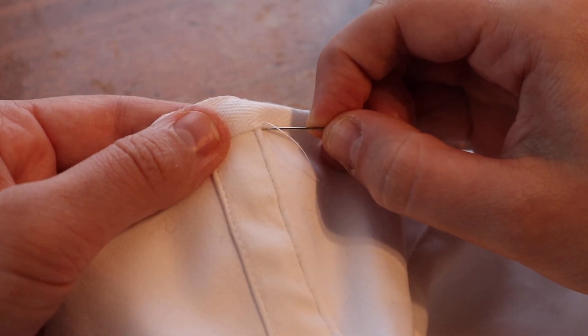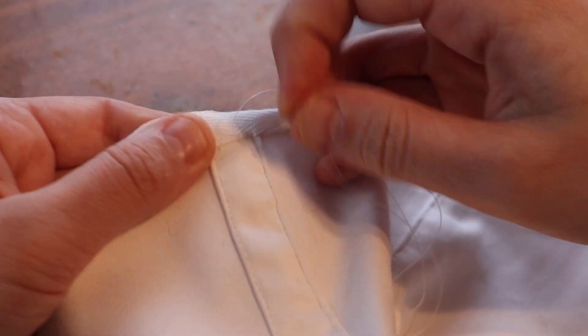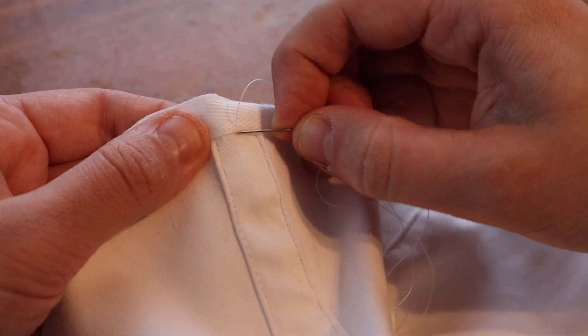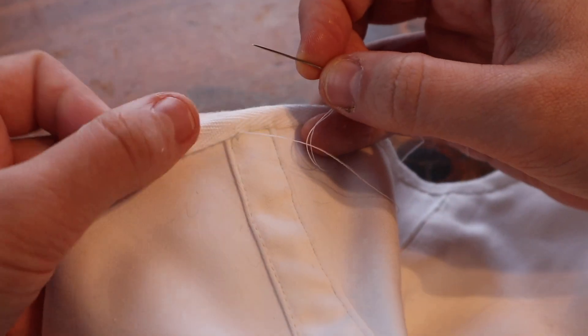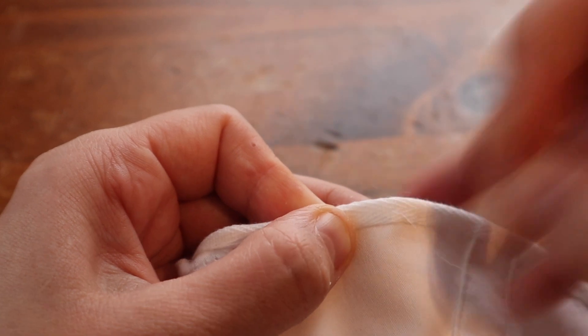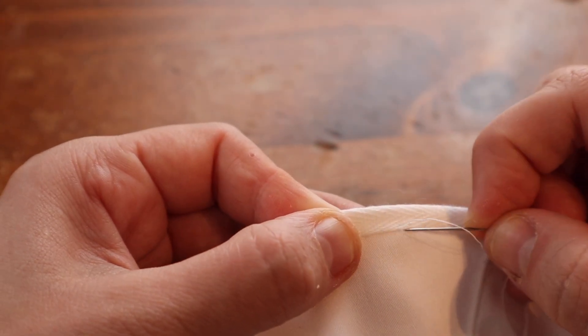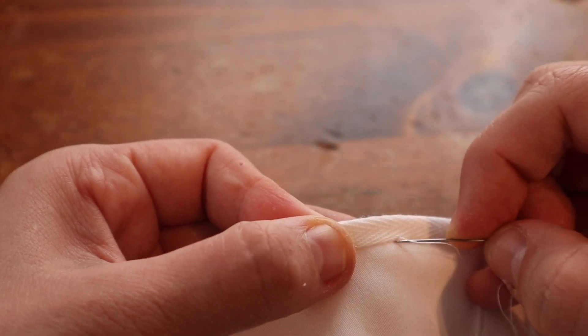And finally, it's time to bind the top and bottom edges of the stays. I'm using half inch cotton twill tape to do this. Working from the outside of the stays, I place the twill tape on top of the edge covering about a quarter inch of the stays. Then I stitch it down with a felling stitch. After I've sewn the outside of the binding, I fold it over and stitch the other edge on the inside of the stays, again with a felling stitch.